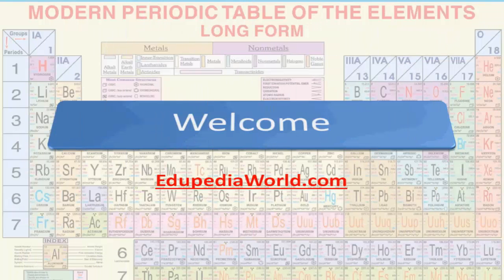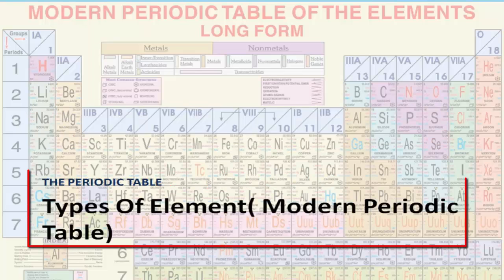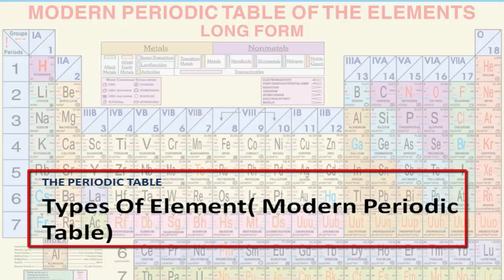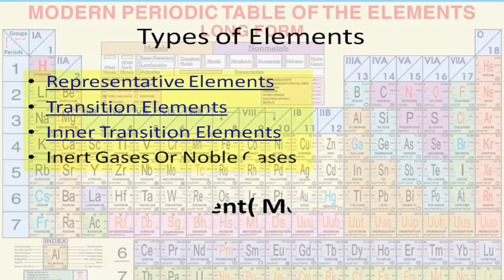Hello friends and welcome to arupediaworld.com, your destination for online education. Today we shall start with the types of elements of the modern periodic table, with the subtopic of inner transition elements. The representative elements and transition elements we have already covered in previous sessions — please refer to the related videos.